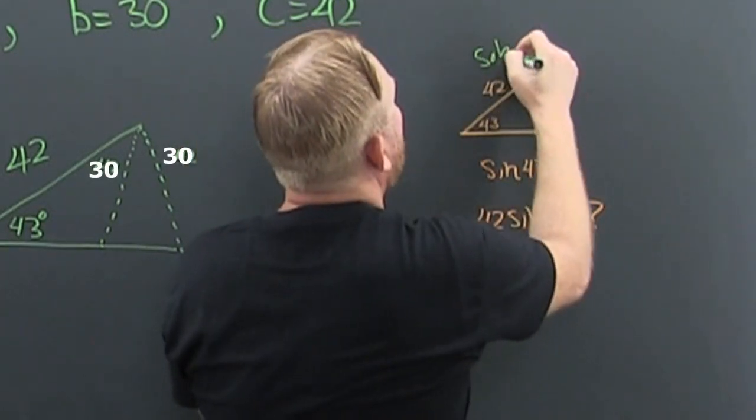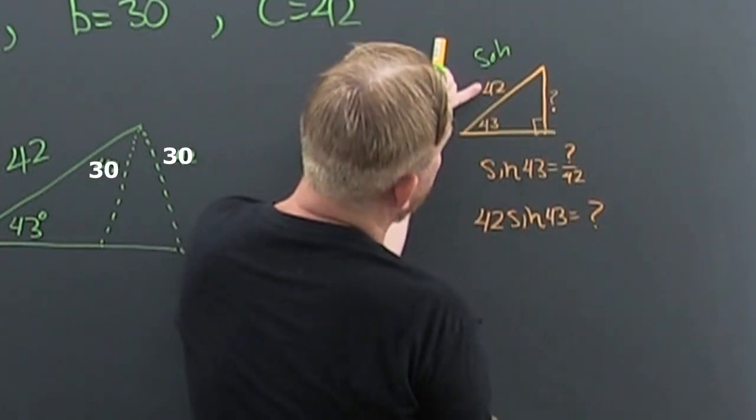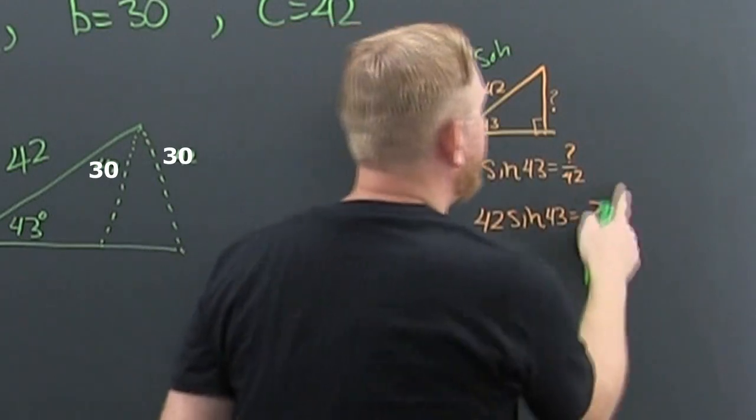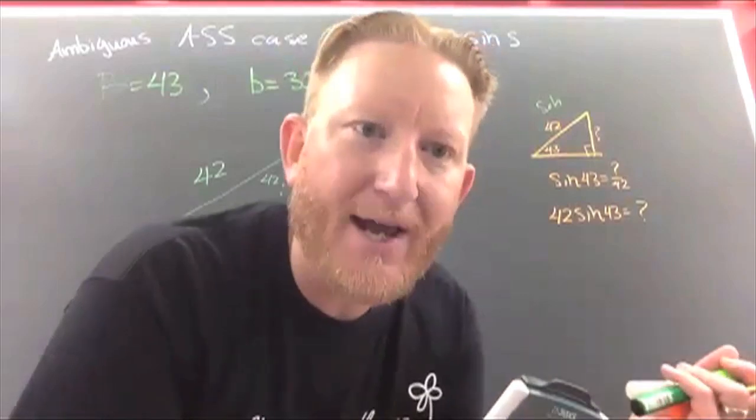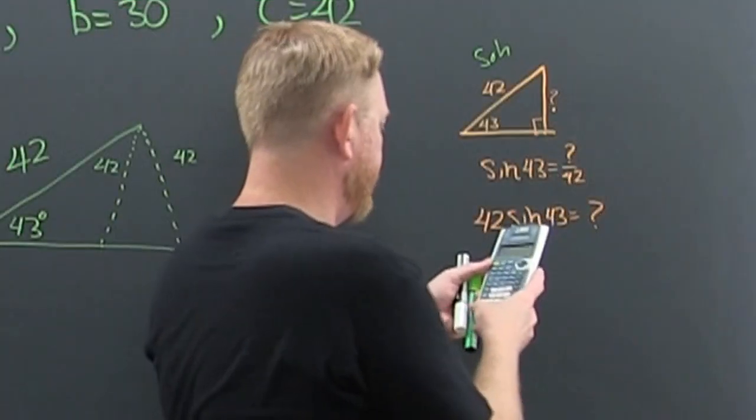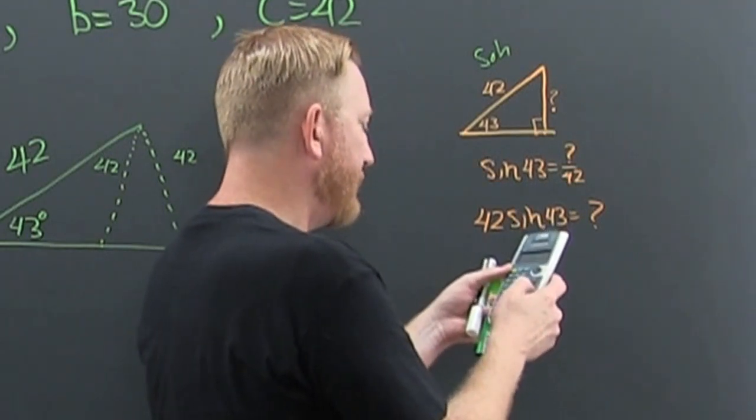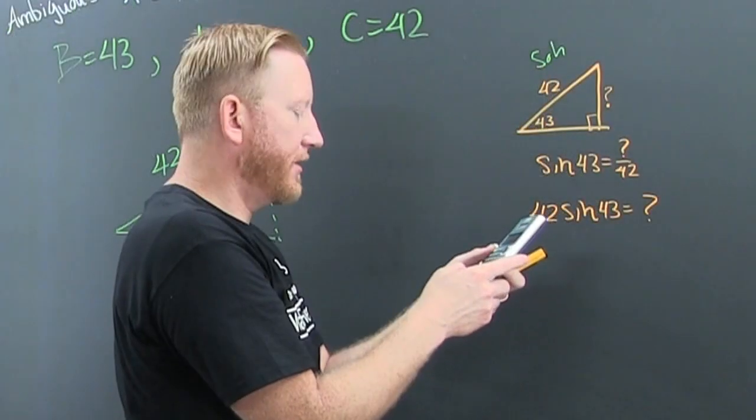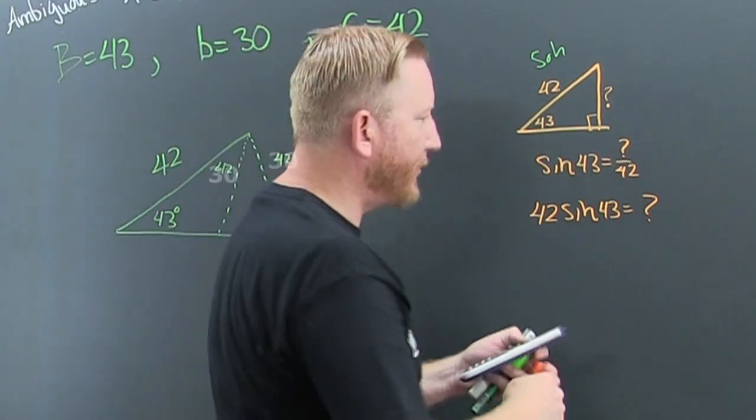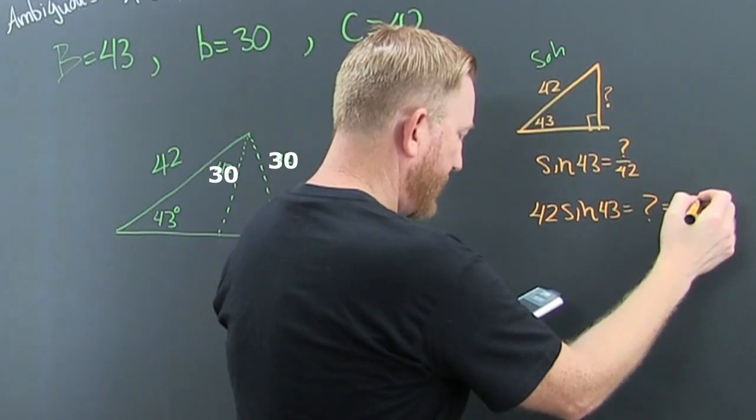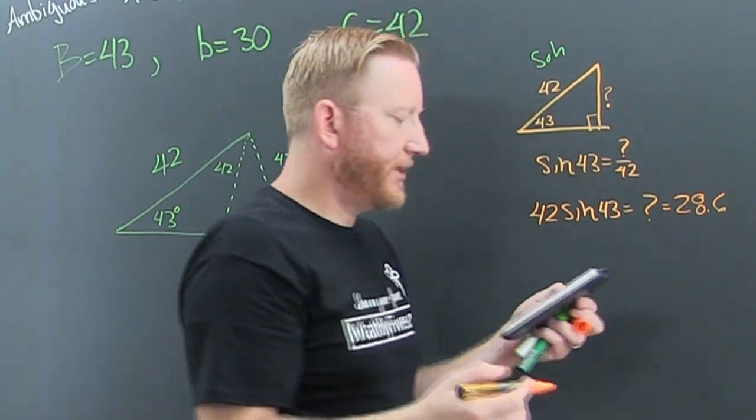It's the opposite over the hypotenuse. If I do the opposite over the hypotenuse, then I'm trying to find out what that should be. So that's 42 times the sine of 43. So that should be 28.643933, whatever.